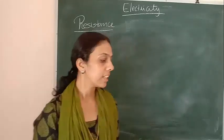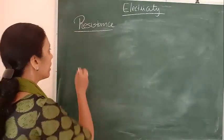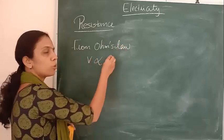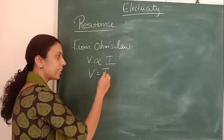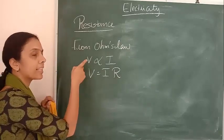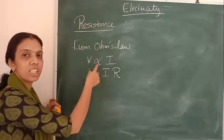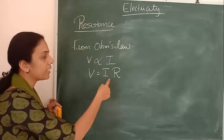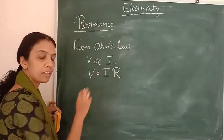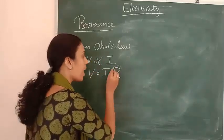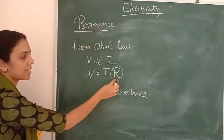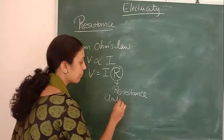From Ohm's law, we mathematically wrote it as V is proportional to I. So V equals I into R. This R is the proportionality constant in this expression. This is the mathematical representation of Ohm's law — that is, V is proportional to I, so V equals I into R. After removing the proportionality sign, we multiply with a constant R. That constant R is known as resistance.